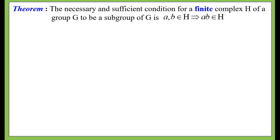The necessary and sufficient condition for a finite complex H of a group G to be a subgroup of G is: a, b ∈ H implies a·b ∈ H. The only difference between this theorem and the previous one is that in the previous theorem H may be infinite, whereas here H is explicitly given to be a finite complex of G.